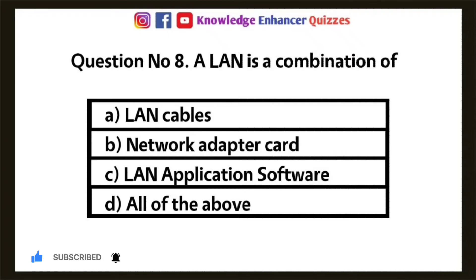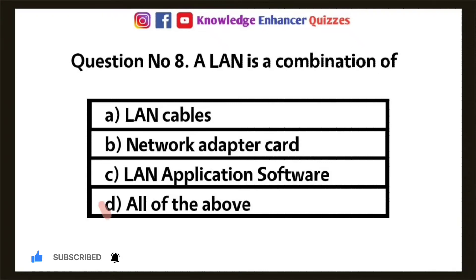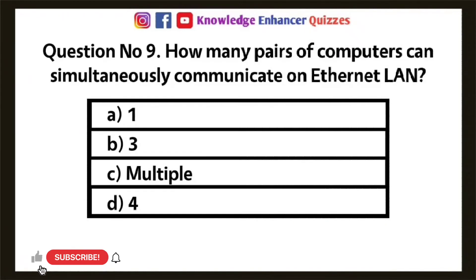Question 8: A LAN is a combination of — Option A: LAN cables, Option B: Network Adapter Card, Option C: LAN Application Software, Option D: All of the above. Option D is the right answer.